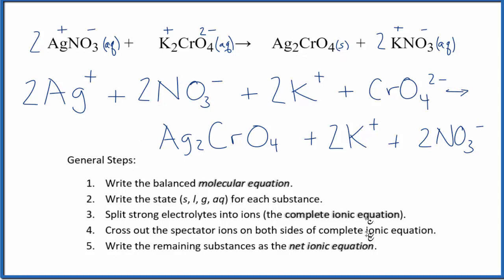So this is what we call the complete or total ionic equation. These are all the ions for the things that are strong electrolytes that are broken apart into their ions. And then we have this solid here.